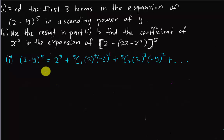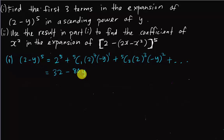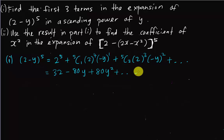Simplifying: 2^5 = 32. Then 5C1 is 5, times 16 equals 80, and since it's minus, we get -80y. The next term: 5C2 is 10, times 2^3 which is 8, gives 80. And since (-y)^2 is positive, we get +80y². So the expansion is 32 - 80y + 80y² + ...